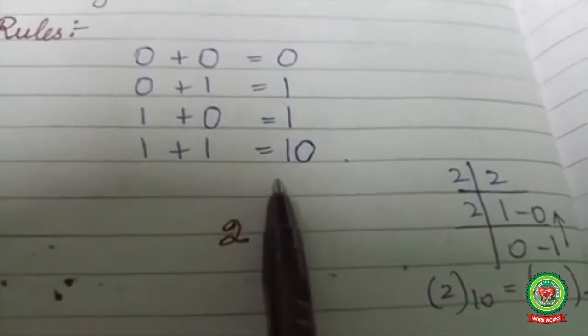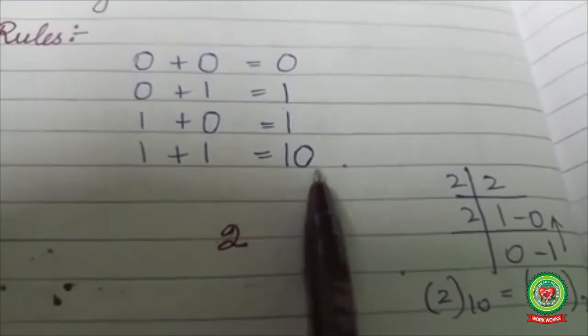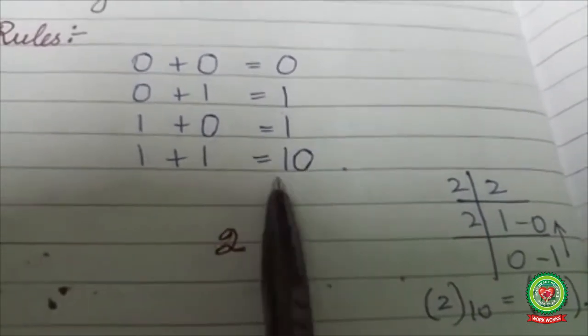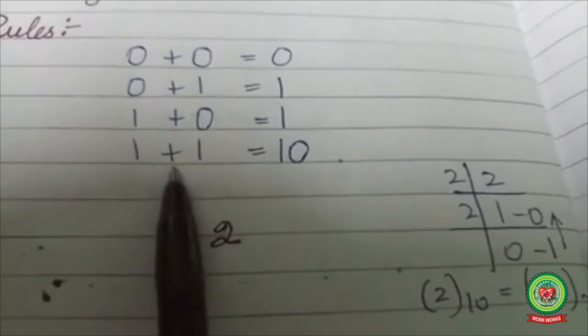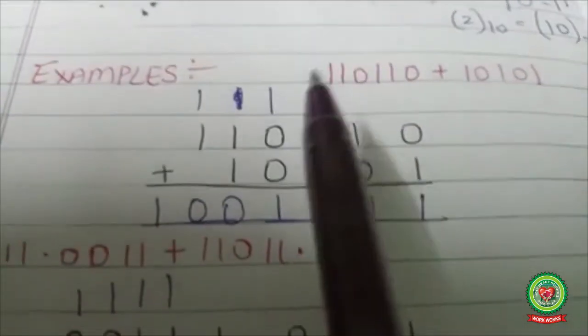That's why in binary addition, 1 plus 1 equals 10. 0 is the base and 1 is the carry to the next number. Let's do an example.